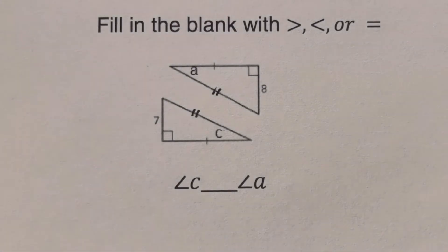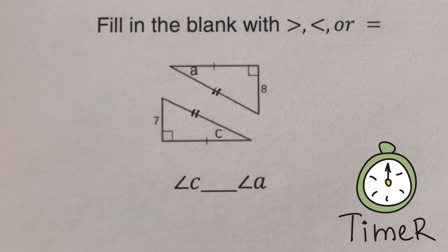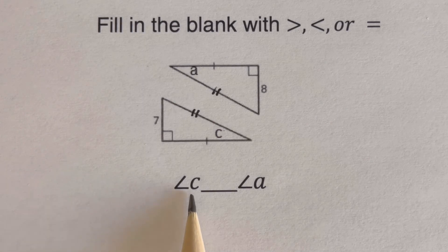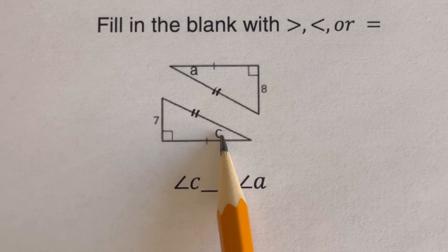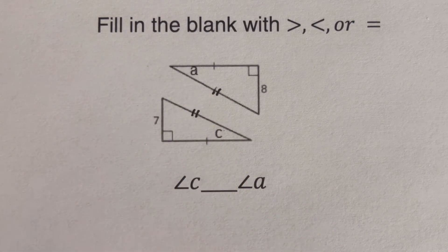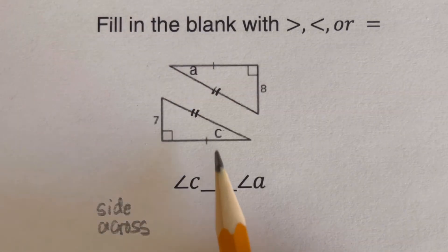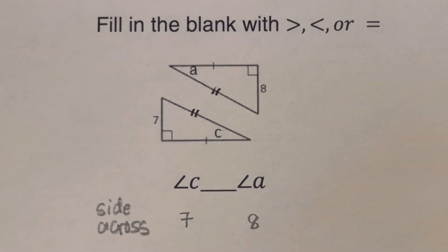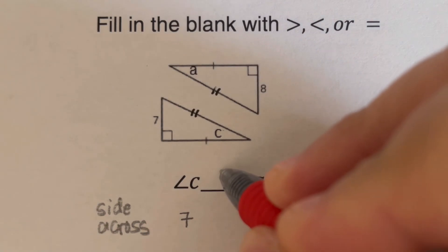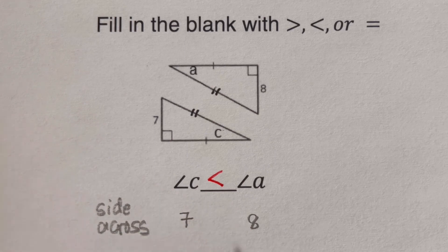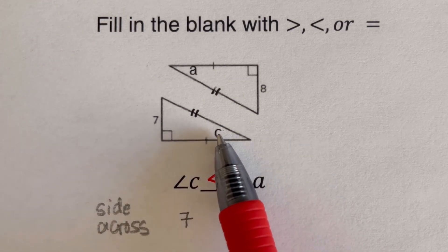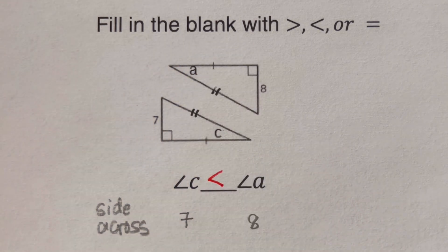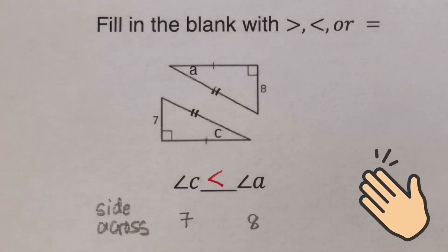Pause the video and try the next problem on your own. We need to fill in the blank: angle C is blank angle A. The side across angle C is 7 and the side across angle A is 8. Since 7 is less than 8, angle C is less than angle A — angle C has a smaller opening, while angle A has a bigger opening.